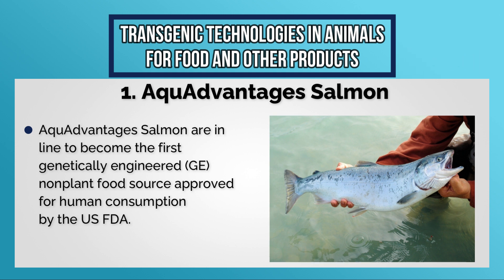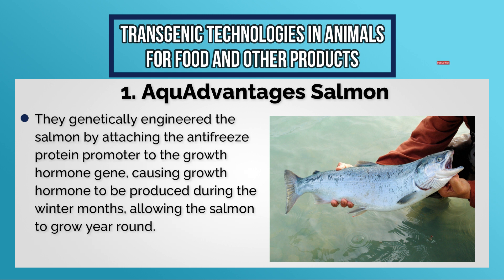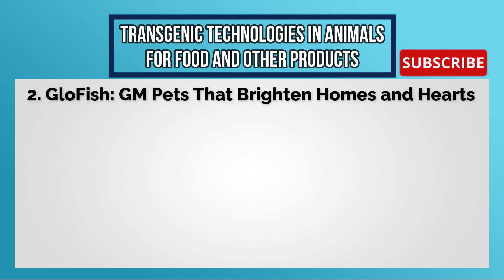AquAdvantage Salmon are in line to become the first genetically engineered non-plant food source approved for human consumption by the U.S. FDA. This is the culmination of more than 20 years of work beginning in the 1980s, when Dr. Choy Hew, who studied an anti-freeze protein that allows fish to survive sub-zero temperatures, was chatting with his colleague Dr. Garth Fletcher. They genetically engineered the salmon by attaching the anti-freeze protein promoter to the growth hormone gene, causing growth hormone to be produced during winter months, allowing the salmon to grow year-round. These fish can grow from egg stage to market weight in 16 to 18 months, as opposed to 3 years for traditional salmon.